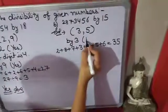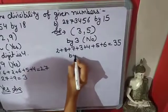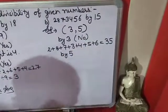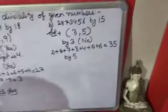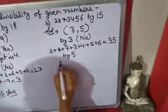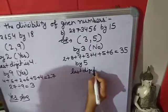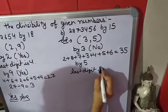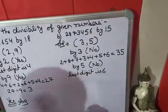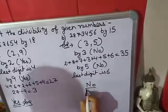So its answer is no. Checking by 5: the rule says the last digit should be 0 or 5, but here the last digit is 6. So it is also not divisible by 5. This means the number is not divisible by 15.